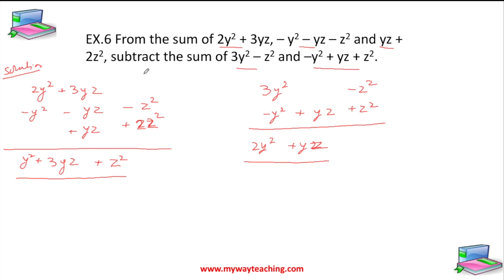Now we have to subtract this from this. So we can take y² + 3yz + z², and subtract 2y² + yz.